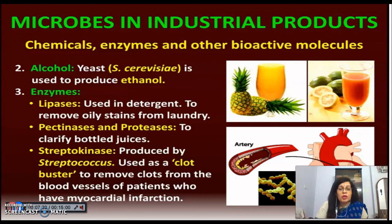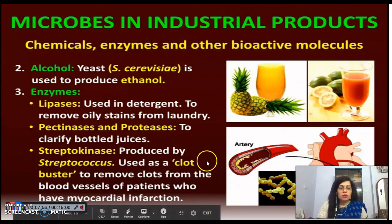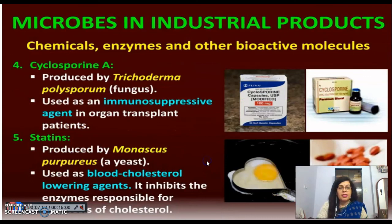Yeast Saccharomyces cerevisiae is used to produce ethanol. Enzymes such as lipases are used in detergents to remove oily stains from laundry. Pectinases and proteases are used to clarify bottled juices. Streptokinase, produced by Streptococcus, is used as a clot buster to remove clots from blood vessels of patients having myocardial infarction.